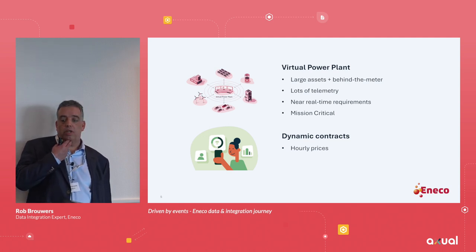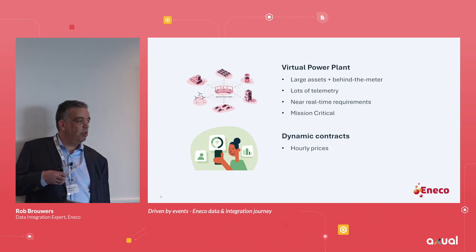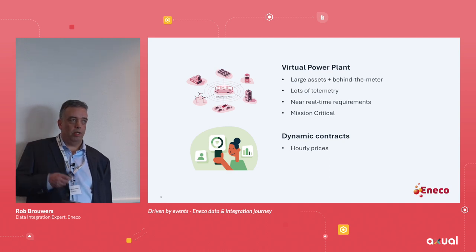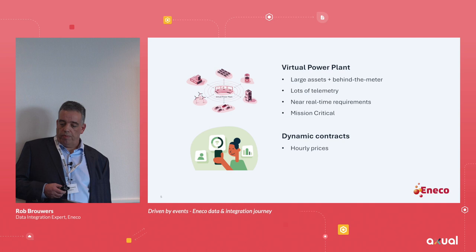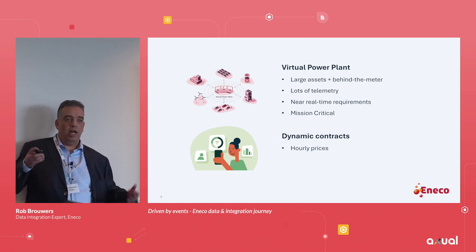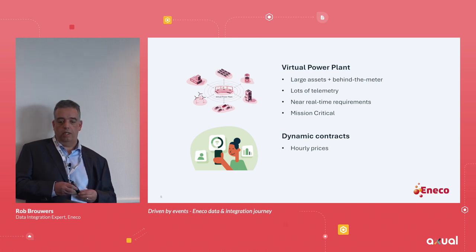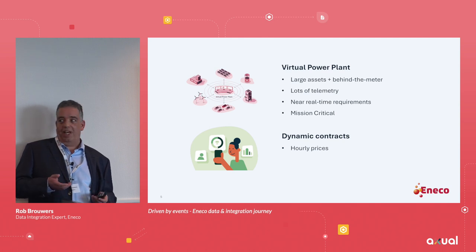Besides the VPP, there are many other use cases that use Kafka at Eneco. One very recent one is the dynamic contract — dynamic pricing — where as a consumer you get a contract where every hour the price of your energy is different. Kafka is important here because the calculation of those prices needs to happen continuously. We feed a pricing engine with all the telemetry and market price information, and they do this calculation on it. It's not real-time — prices are determined every day — but it's the same kind of telemetry and pricing data.